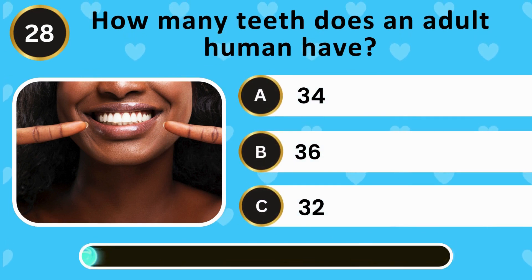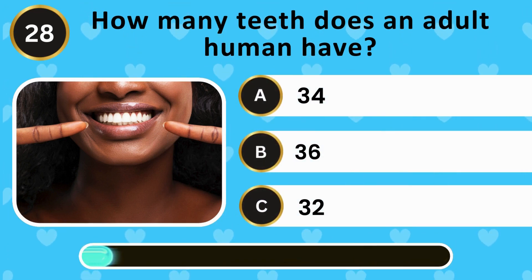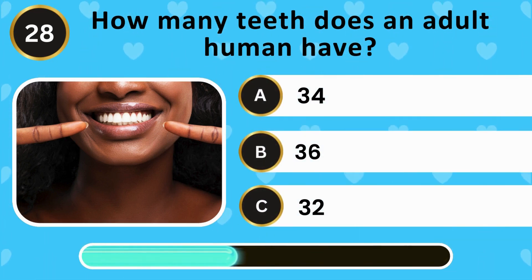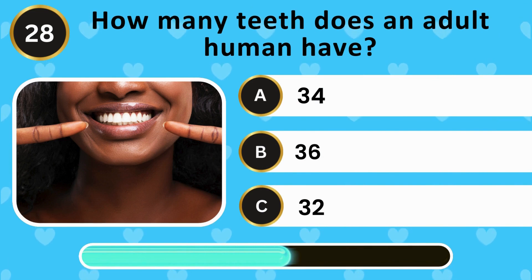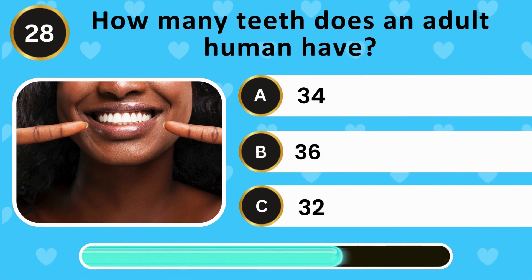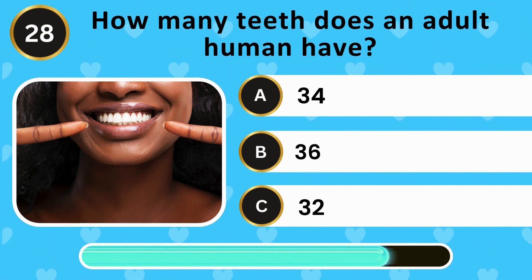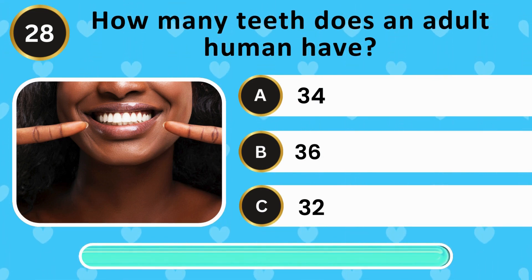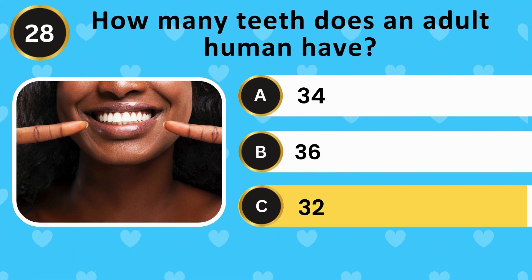How many teeth does an adult human have? 34, 36, 32. The answer is 32.